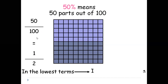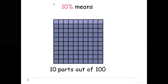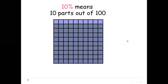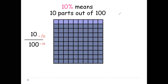For this new grid, 10 percent means 10 parts out of 100. So we shade 10 parts — that's 10 over 100. To simplify, we divide both the numerator and denominator by 10. 10 divided by 10 is 1, and 100 divided by 10 is 10. So the simplest form is 1 out of 10. 10 percent as a fraction in simplest form is 1 out of 10.